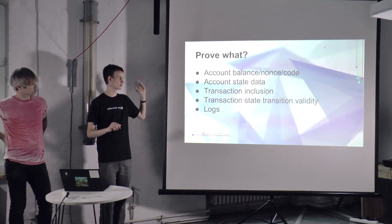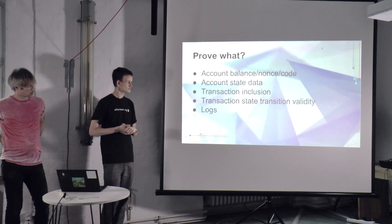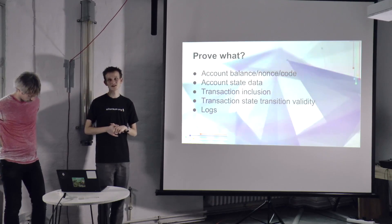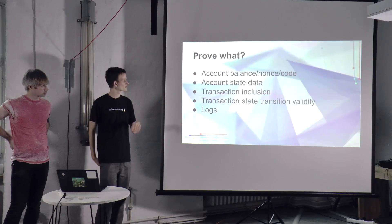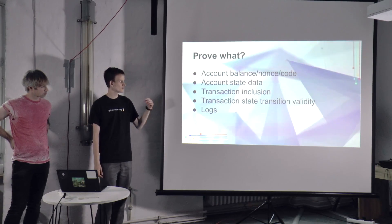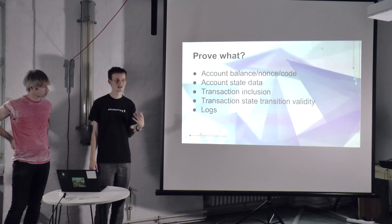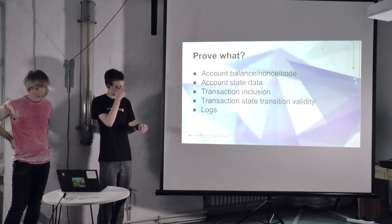So what do we care about proving? What do we care about light nodes being able to securely access? Account balance, account nonce, account code, account storage data, whether or not a transaction has been included. One thing I was asked a couple days ago is how does a node — or how does the JavaScript even know that a particular transaction was processed, so they can start sending off another transaction? This is something that the light client should be able to figure out from the blockchain. Also, if clients want to start probabilistically validating that a block was produced correctly, they can do that.